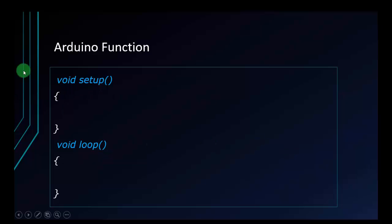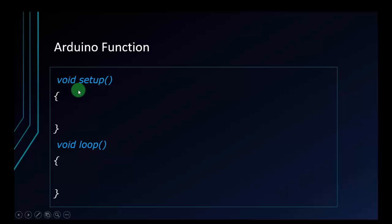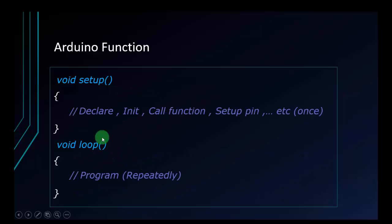Two default functions will appear: the setup function and the loop function. Note that we don't have a main function in this IDE like other IDEs. We just have these two functions. Both are void, which means in these default functions we don't need to return any variable. But when you create your own user function, you can put any data type you want. In the setup function, we usually set up some initialization to start, and we run the program in the loop function. You declare variables, set up pins, etc. It runs only once.